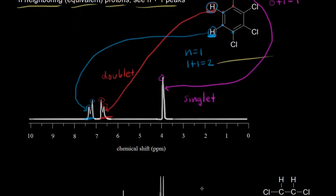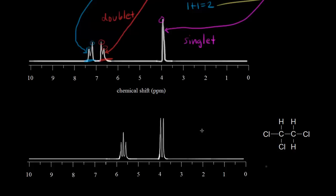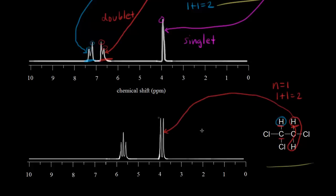Let's do another one. We also saw this molecule in the last video. We expect one signal for the blue proton and one signal for these red protons. Let's think about the red protons first. How many neighboring protons do we have? We go to the carbon next door and there is one proton — one neighbor. So n is equal to one. We expect one plus one peaks, so we expect two peaks. The signal for the red protons has two peaks — we get a doublet.